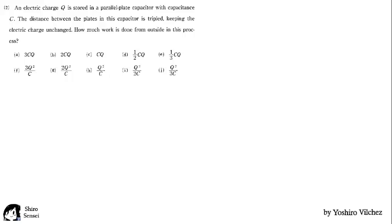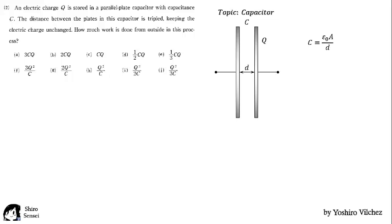The topic here is capacitor. We have two situations. First, two parallel plates with a distance between them as d, capacitance C and charge Q. By definition, the capacitance is given by ε₀ times the area of the plate over the distance. And the internal energy is given by Q² over 2C.